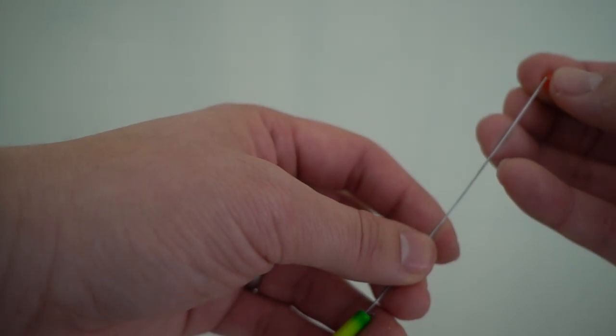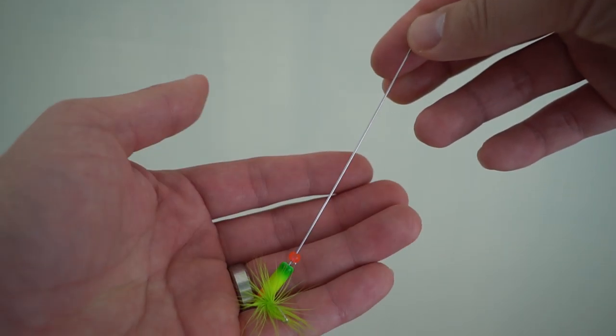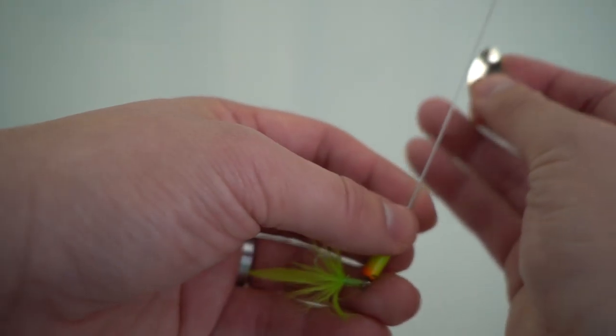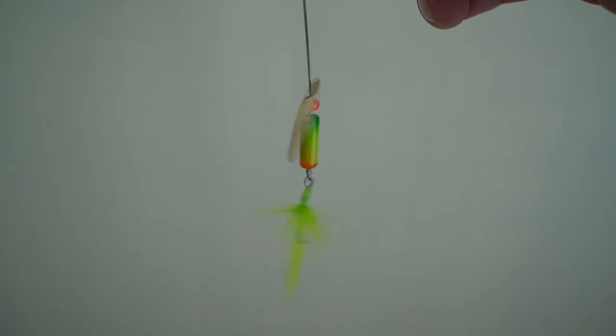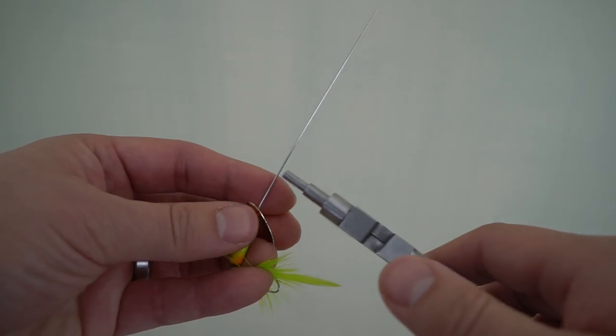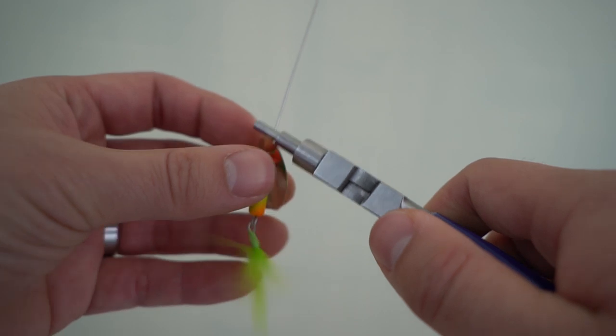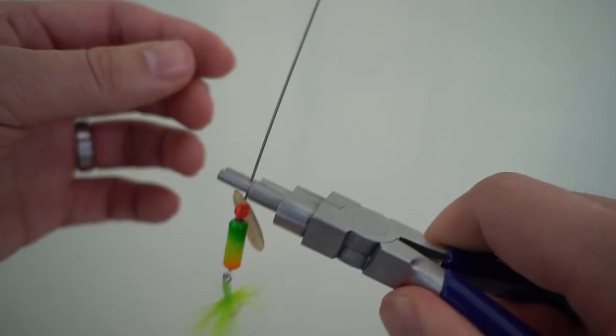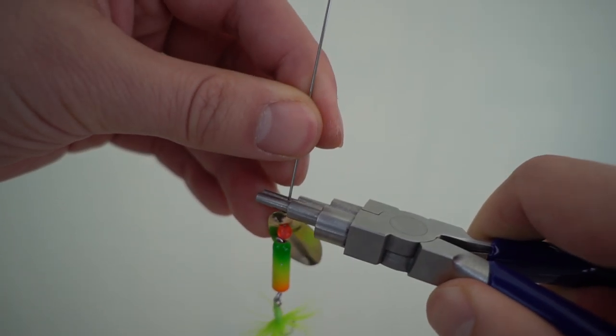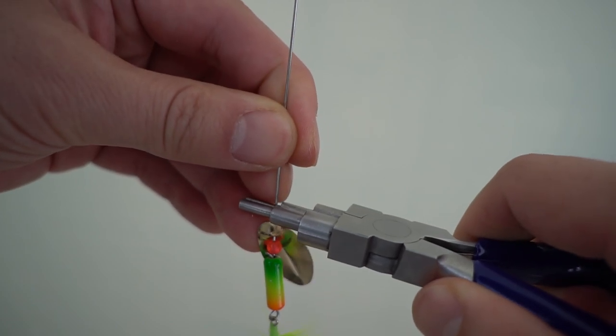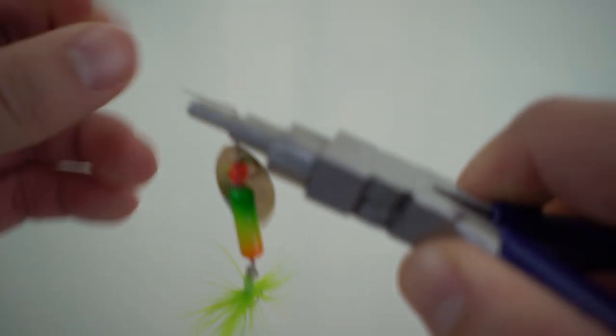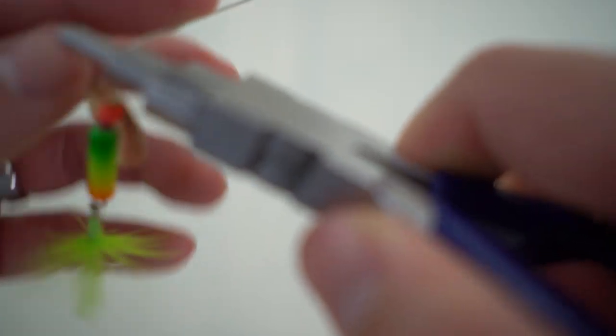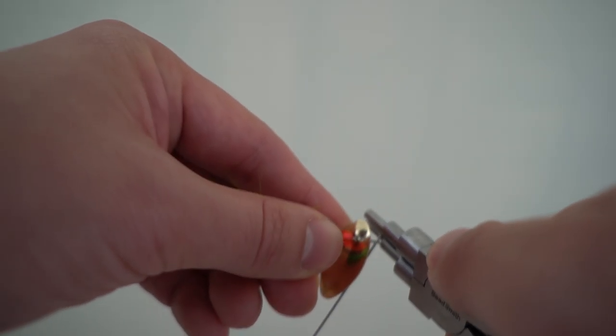Put a bead on from the top. Then, take our inline spinner. There we go. Look at that. Good to go. Make our very last loop. Make our very last loop. Right there.